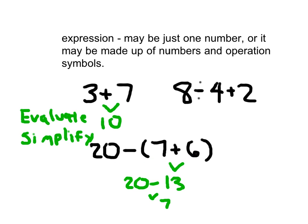So we've got this whole expression: 20 minus (7 plus 6), evaluating down to one number. Not only is it equal to 20 minus 13, but it does also equal 7. In our next expression, we've got two operations: addition and division. Later on, you're going to learn something called the order of operations. Here, we go ahead and do 8 divided by 4 first, and then add 2. So 8 divided by 4 plus 2 evaluates and simplifies to 4.